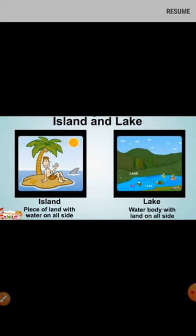Then the difference between island and lake. An island is a piece of land with water on all sides, whereas a lake is a water body with land on all sides. So these are some of the special terms or names of water bodies that fall under hydrosphere.